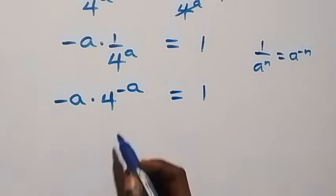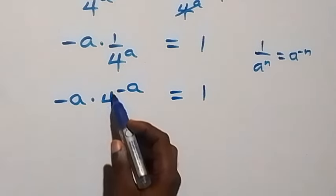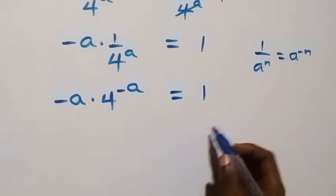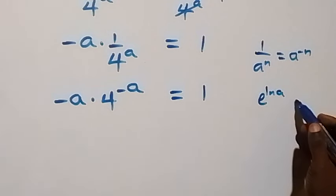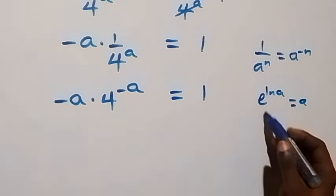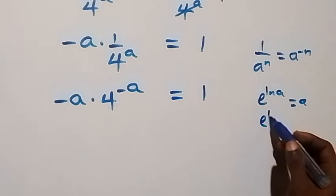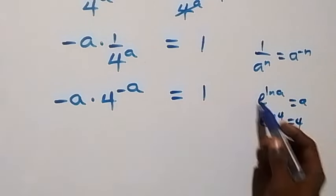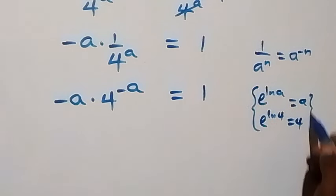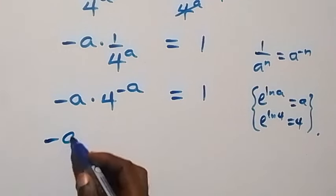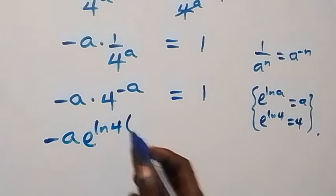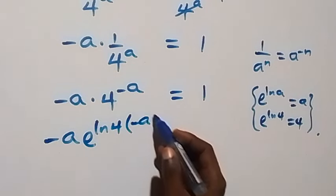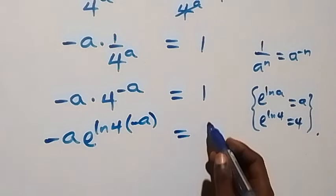And from what we have here, we can write 4 as exponent ln 4, since exponent ln a equals a. So applying this, it implies that here we have minus a times exponent ln 4, raised to power minus a, then multiplied by minus a equals to 1.